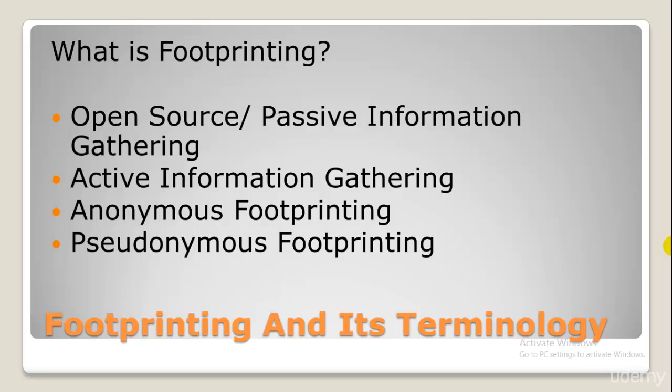After that we have anonymous footprinting, which refers to collecting information from sources anonymously so that your efforts cannot be traced. People normally use Tor browsers, which are famous for anonymous web browsing. Then there is pseudo-anonymous footprinting, which refers to collecting information from sources published on the internet but not directly linked to the author's name — published under a different name, a pen name, or by a corporate or government official prohibited from posting under their original name.